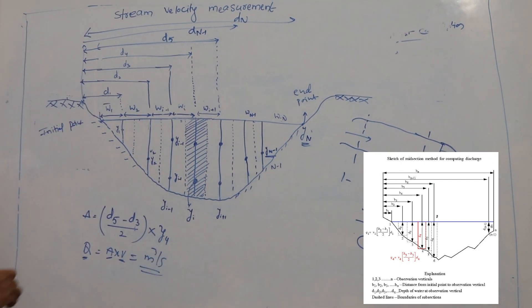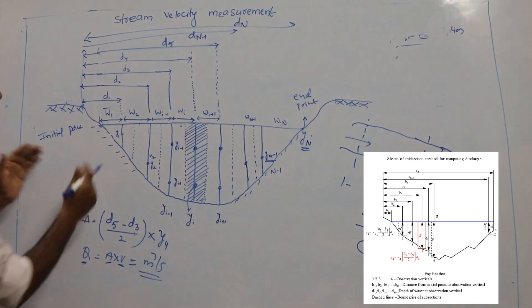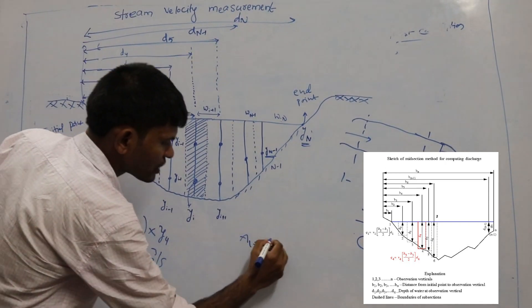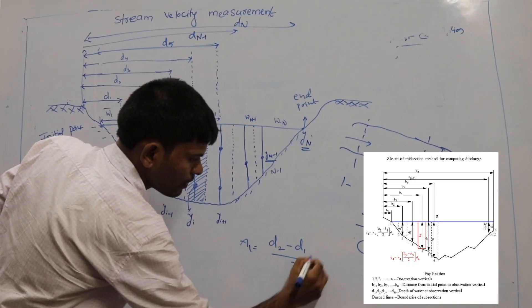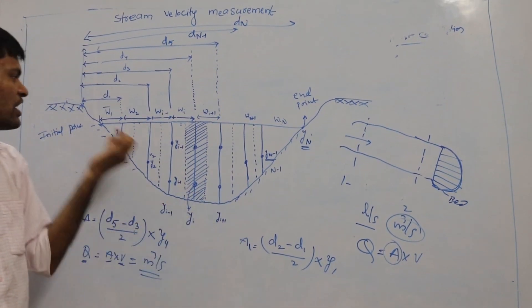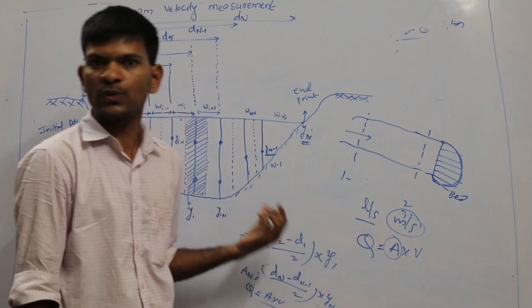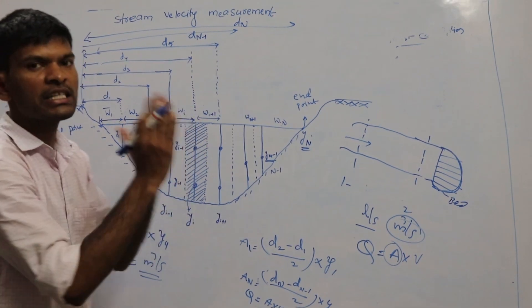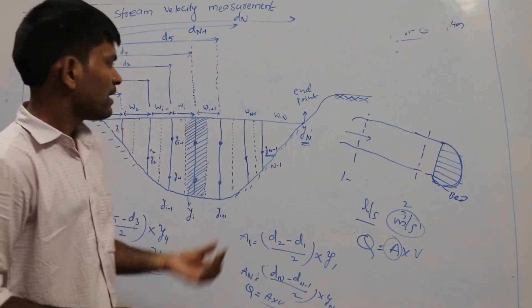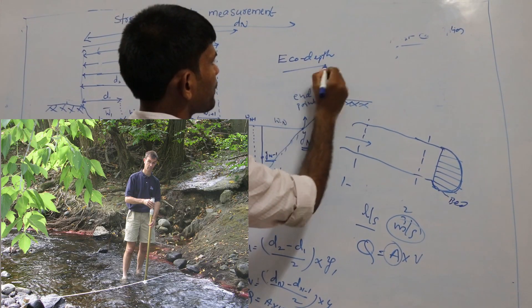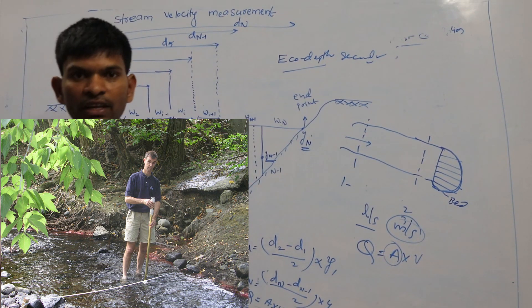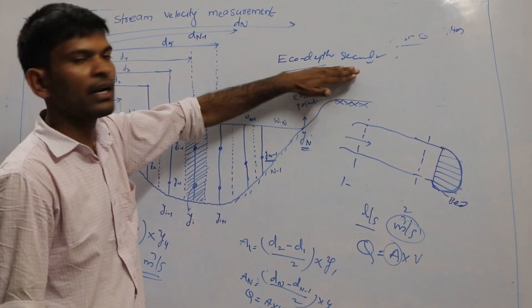For an initial point, the area at point 1 equals (d2 - d1) / 2 multiplied by depth y1. For more accurate results, the entire stream should be divided into a greater number of small segments — more segments means higher accuracy. The cross-sectional area should not vary significantly. Nowadays, echo depth recorders are used for measuring depth accurately, especially in high-flow or high-velocity streams.